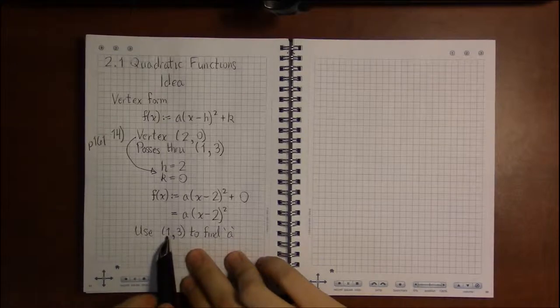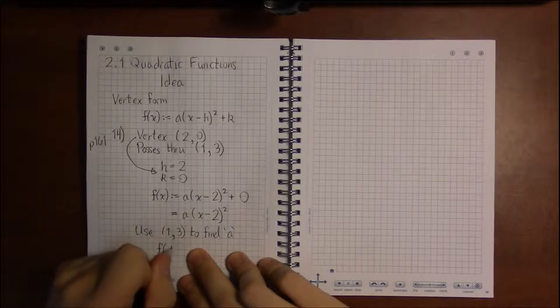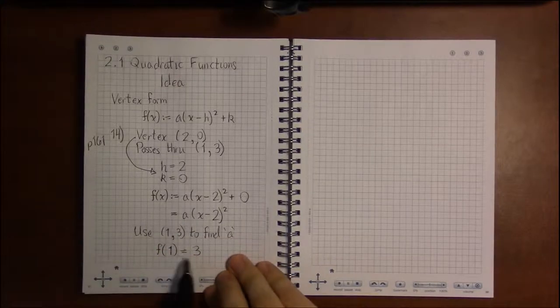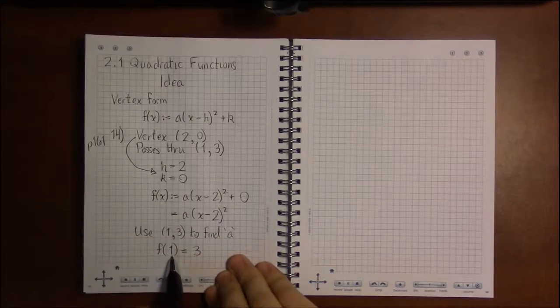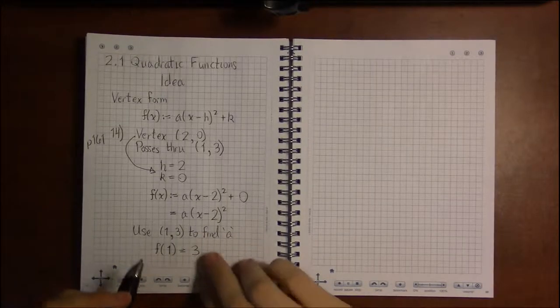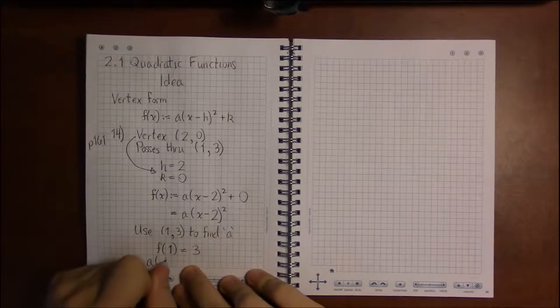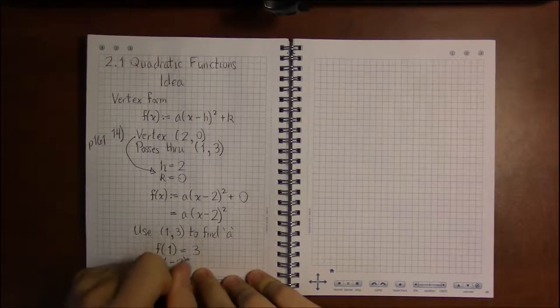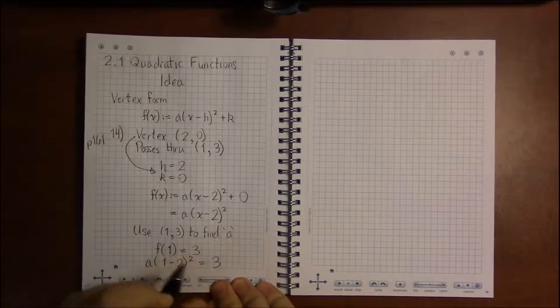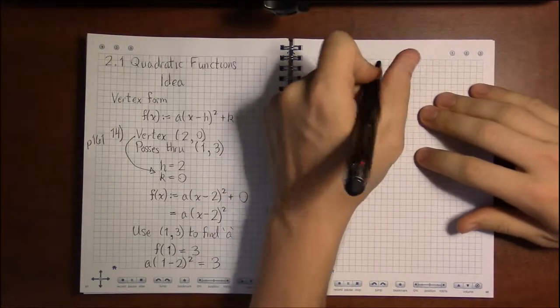So we plug 1 in for x, and we know that when x equals 1, that y, the output of f, is equal to 3. So when x is 1, our output is 3. Well, if we plug 1 in for x in this formula above, we get a times (1 - 2)². That product should be equal to 3. So when we do 1 - 2, we get -1.